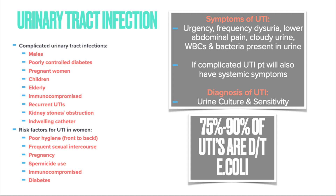Important risk factors for UTIs in women include poor hygiene — specifically not wiping front to back — since 75 to 90% of UTIs are due to E. coli. Women have shorter urethras, making infection easier. Other risk factors include frequent sexual intercourse, pregnancy, spermicide use, immunocompromised status, and poorly controlled diabetes. The gold standard for diagnosing a UTI is the urine culture and sensitivity.